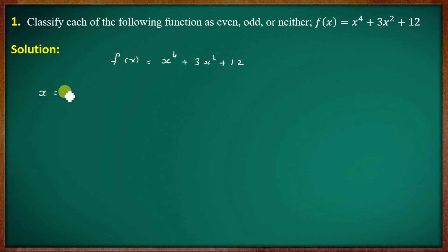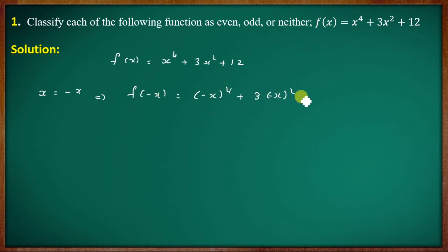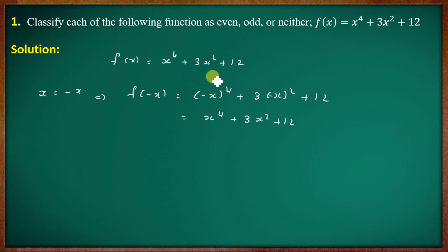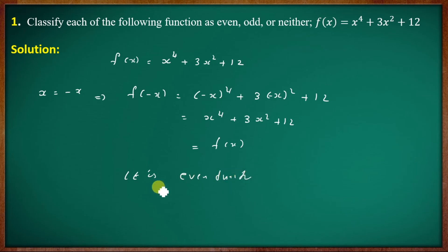Substituting x equal to minus x: f of minus x equals minus x all to the 4th plus 3 times minus x squared plus 12. Since minus x to the 4th equals x to the 4th and minus x squared equals x squared, we get f of minus x equal to f of x. Therefore, the given function is an even function.